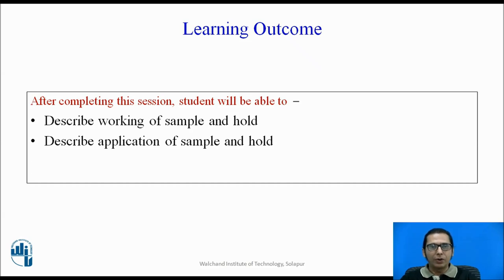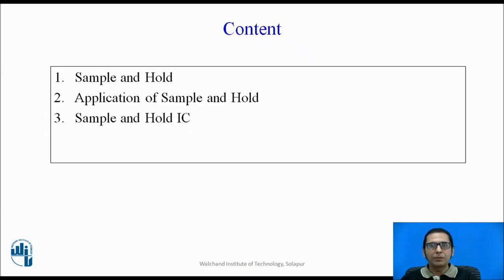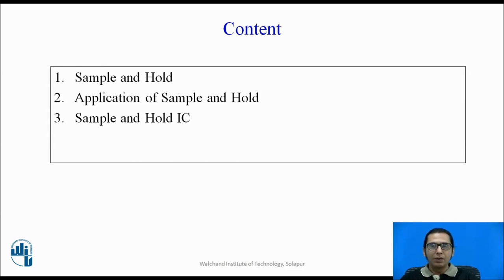The learning outcomes for this session are: after completing this session, the student will be able to describe the working of a sample and hold circuit and can describe one of the applications of sample and hold. The content of this session includes a basic introduction to a sample and hold circuit — how it can be designed using an operational amplifier — its application in analog to digital conversion, and how the sample and hold circuit is available in IC, that is, integrated circuit form.